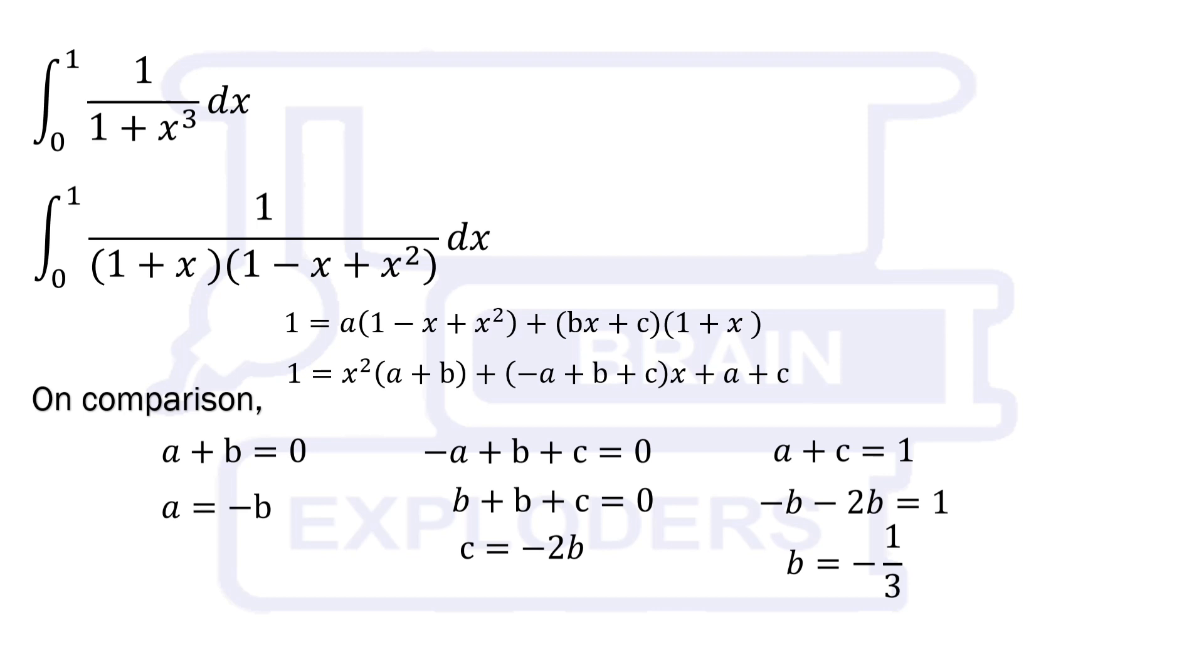We get b equals minus 1 by 3, c equals 2 by 3, and a equals 1 by 3.